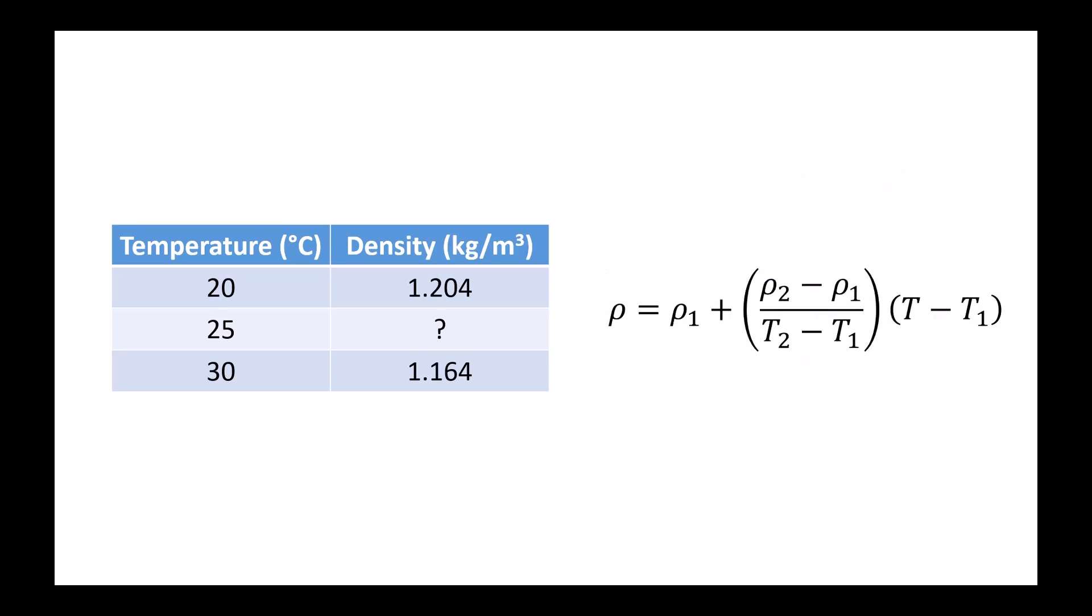So here is our linear interpolation formula that we're going to use. Our first density corresponds to a temperature of 20 degrees. Our second density corresponds to a temperature of 30 degrees. Our second temperature is 30 degrees. Our first temperature is 20 degrees. And finally, we're looking to solve for the density at a known temperature of 25 degrees.